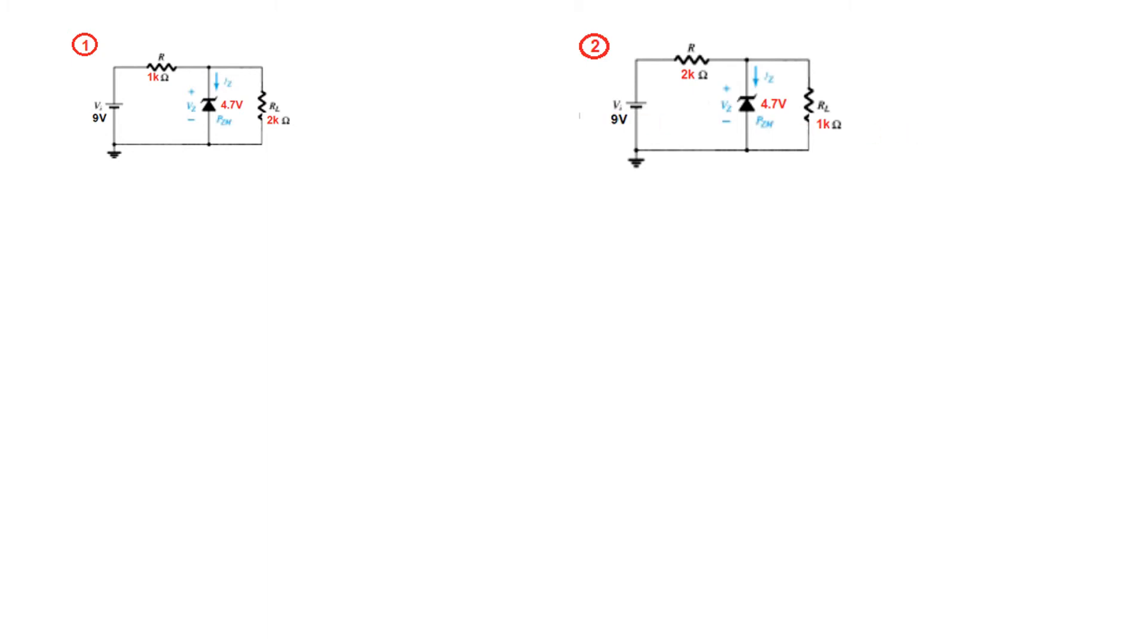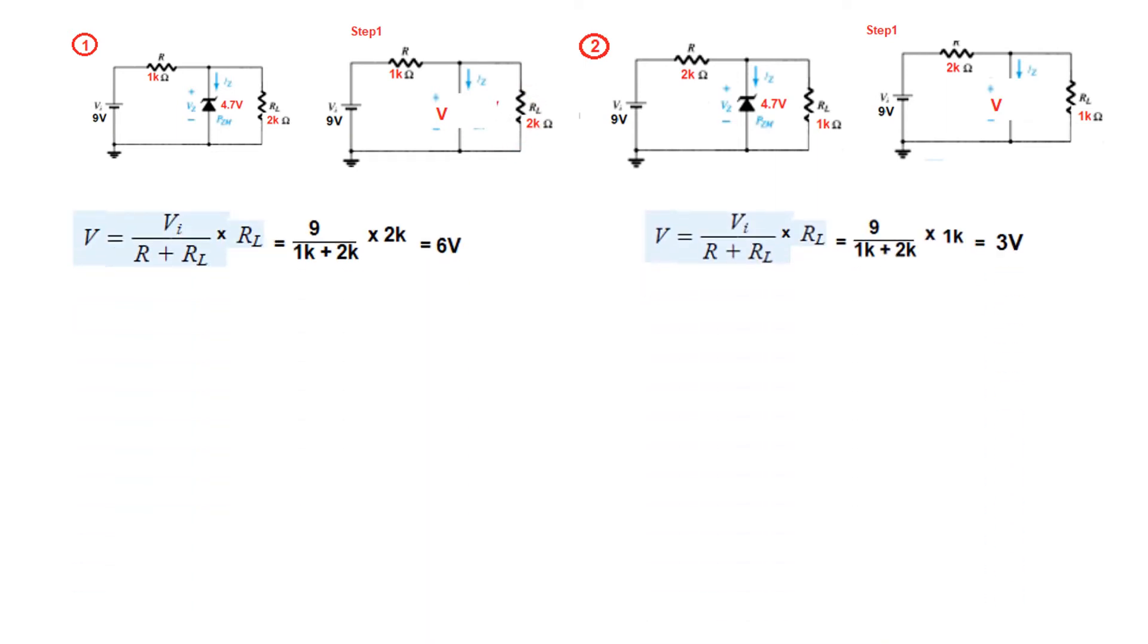So the first step or step 1 is that we remove the Zener and then calculate V which is actually the voltage across RL. So V in this case, you can see, this divided by the total resistance multiplied by 2K is 6 volt. Whereas in this case divided by 1K it is 3 volt.